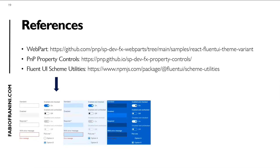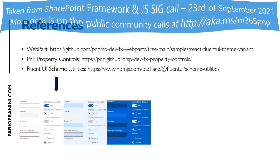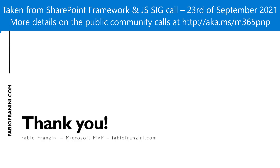Some references: the first one is the web part URL — the URL of the repo where you can find this web part's source code. There are also references to the PnP property controls and the Fluent UI theme utilities, an NPM package you can add to your project. This package contains all the utilities to generate the different variations from a specific Fluent UI theme. Thank you, and back to David.